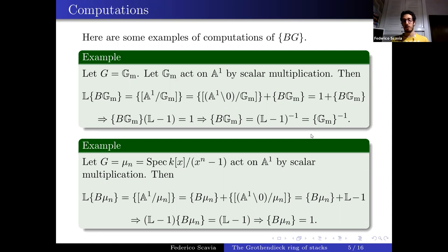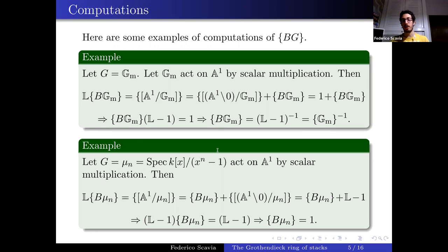These simple examples show a pattern: when G is connected, the class of BG equals the class of G^{−1}; when G is finite, the class of BG equals 1. This just happens in many examples.